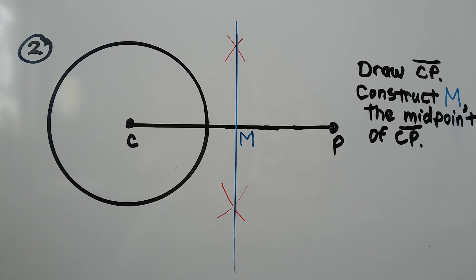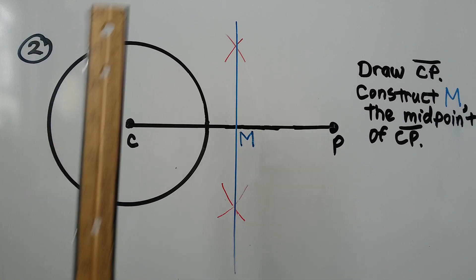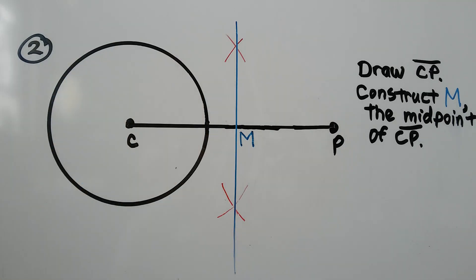We take our straight edge. We draw it through those intersections, and we've got our midpoint of CP.